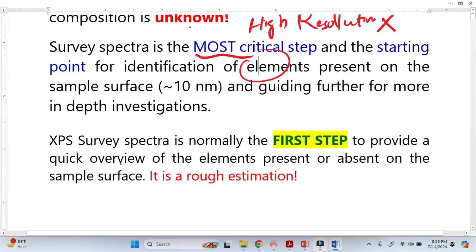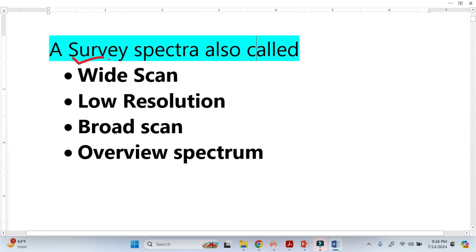This is basically the first step to provide a quick overview of the elements present or absent on the sample surface. It is basically rough estimations. The survey spectra is also sometimes called wide scan because we use wide range binding energy.